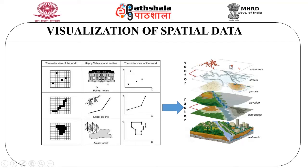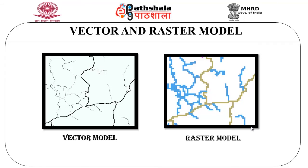Here we can see customers represented as brown color dots, streets shown as green lines, and parcels being delivered to certain locations represented using particular color methods. It also shows elevation and land usage where the bottommost is the real world data. If we look at the vector and raster models, the vector model is going to be very smooth in nature, whereas in the raster data model the data is not represented in a smooth fashion.